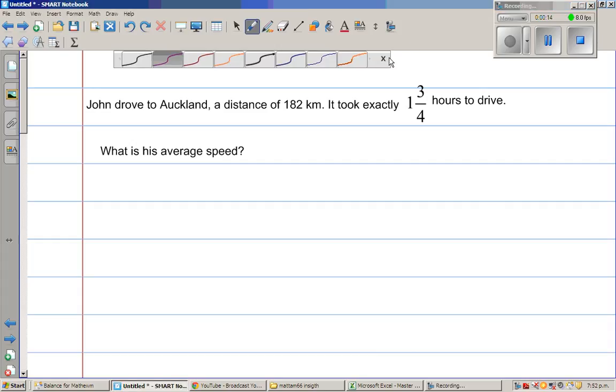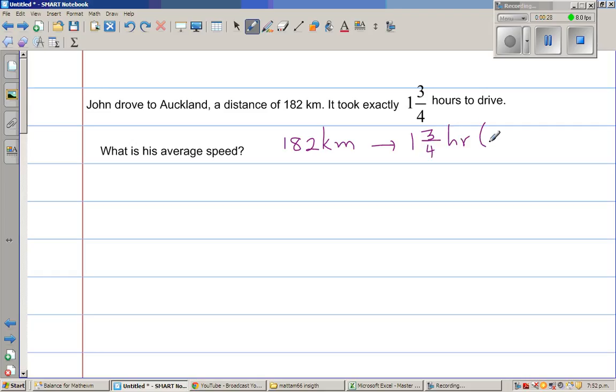So here the question is, for John to travel 182 kilometers it took one and three-quarter of an hour. If you write this in hours and minutes, this is one hour, 45 minutes. Three-quarter of an hour, one quarter is 15 minutes. So the question is, in one hour he traveled how many kilometers?